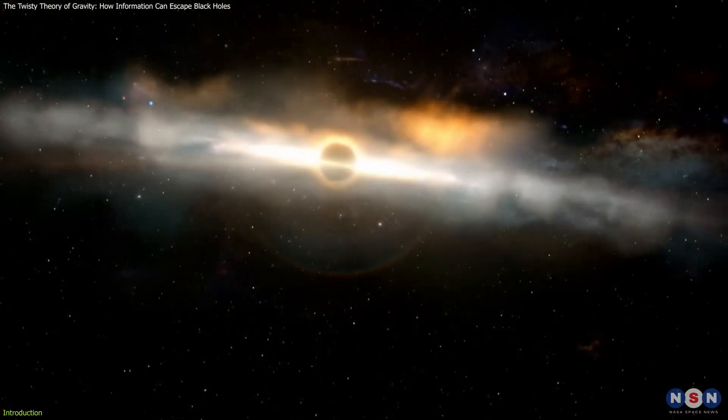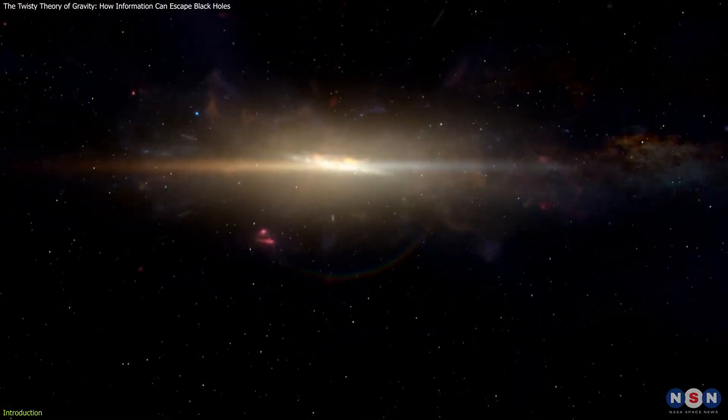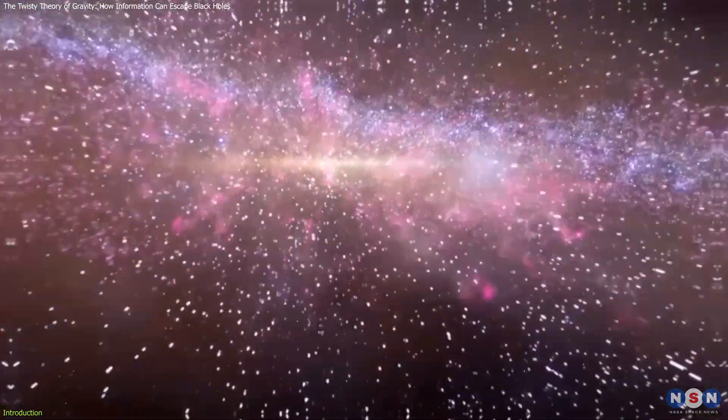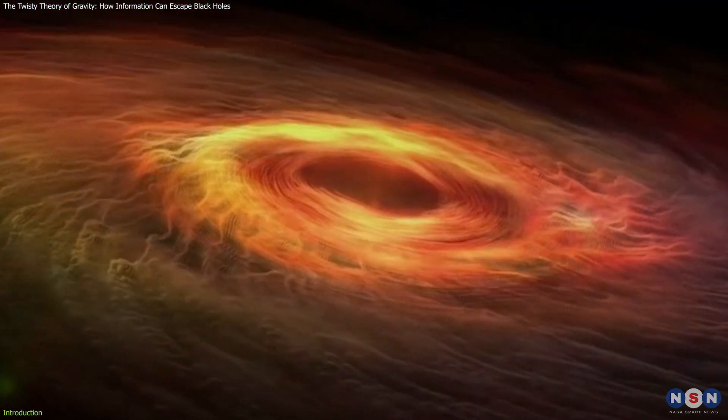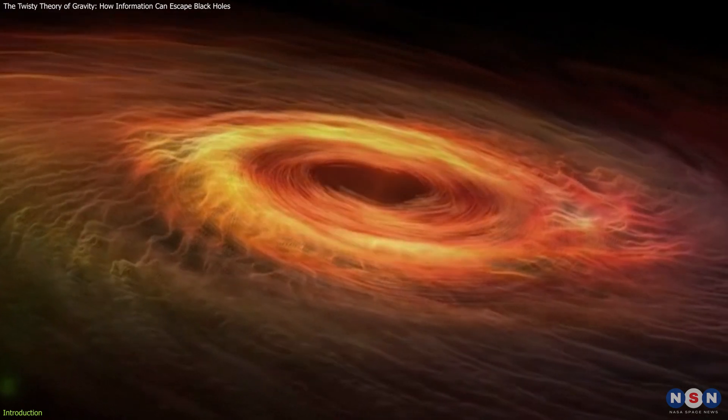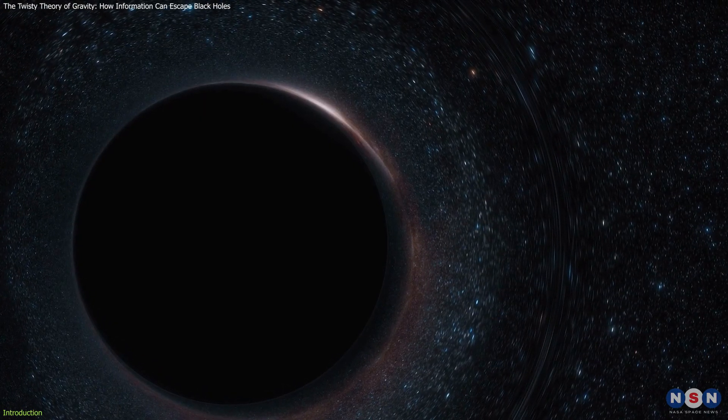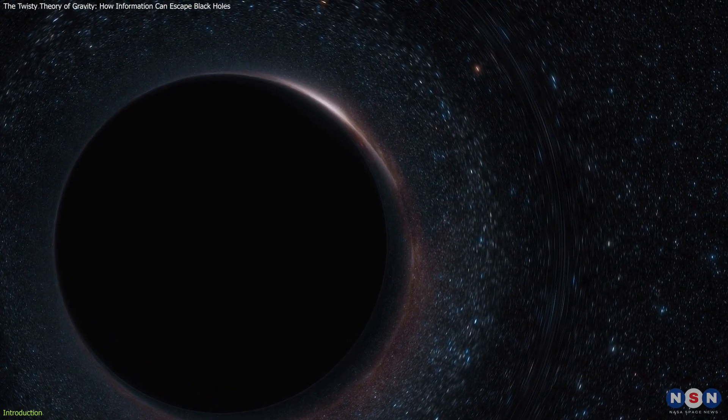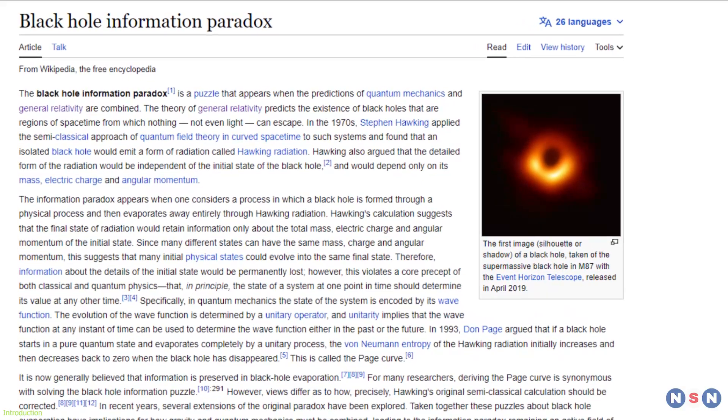The paper suggests that information can escape from black holes using quantum teleportation, and that black holes have quantum hair that encodes information on their surfaces using twisters. This twisty theory of gravity could potentially solve one of the biggest mysteries in physics, the black hole information paradox.